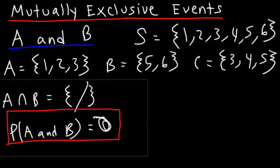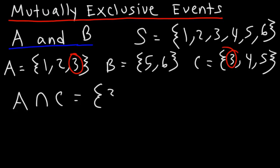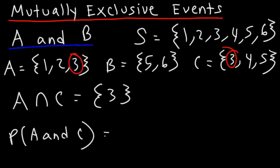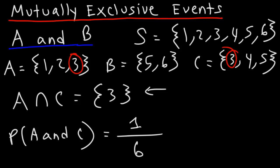What about events A and C? Are they mutually exclusive? Notice that A and C share the outcome three. So the intersection of these two events is three. The probability of getting A and C is going to be this one outcome over the six possible outcomes. So because the probability of getting A and C is not zero, A and C are not mutually exclusive events. However, A and B are mutually exclusive events.